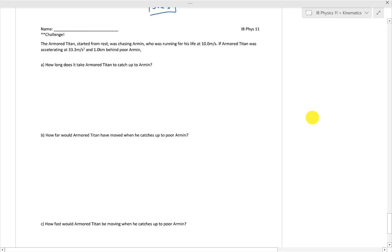Okay, so let's get started. First, let's try to break this problem down. We have the Armored Titan. If you know the reference from Attack on Titan, this thing started from rest. He is chasing Armin, poor Armin, running for his life at 10 meters per second.